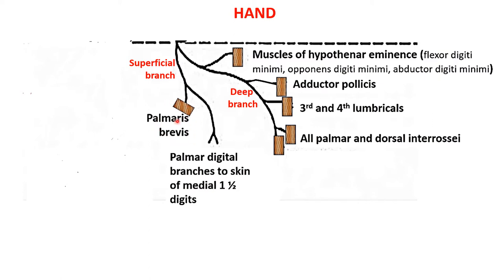In total there are four muscles of the hypothenar eminence. The deep branch — the motor branch — supplies 14 muscles, including three muscles of the hypothenar eminence: flexor digiti minimi, opponens digiti minimi, and abductor digiti minimi. You must also remember that the deep branch of ulnar nerve supplies adductor pollicis. It also supplies the medial two lumbricals — that is, the third and fourth lumbricals — and all the interossei, both palmar and dorsal.